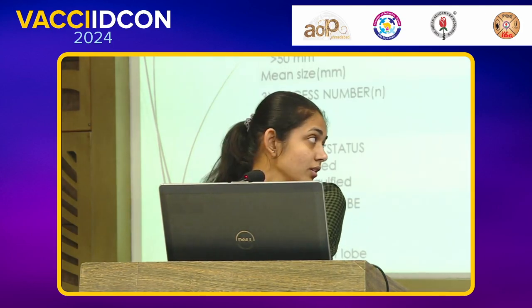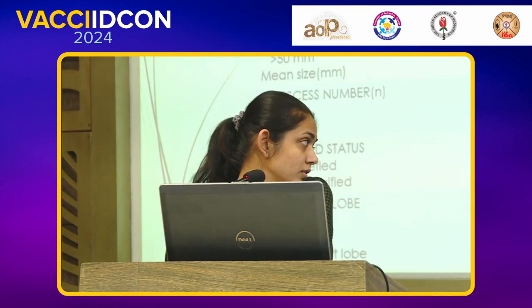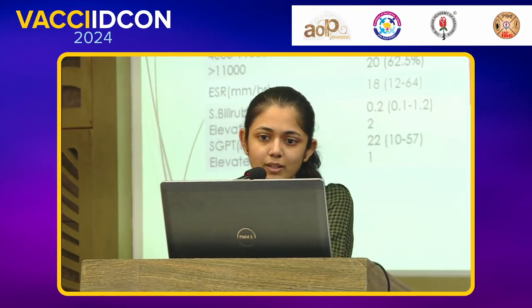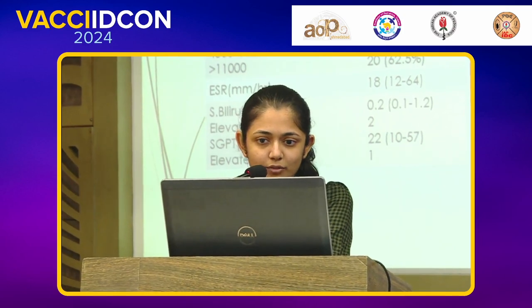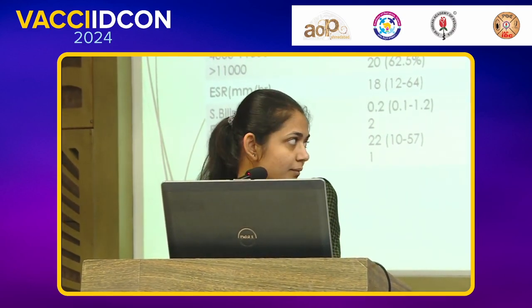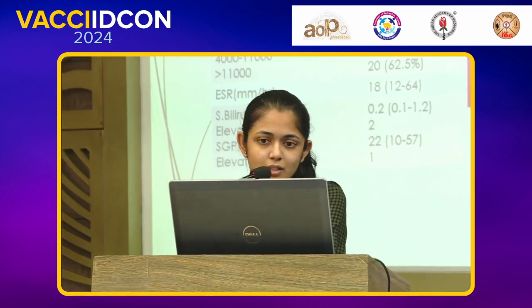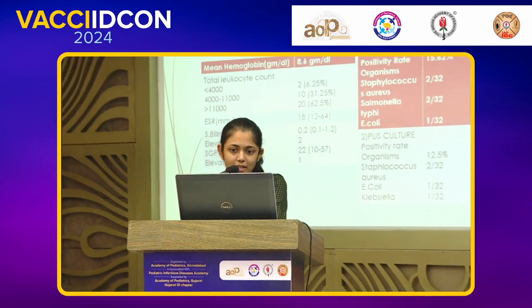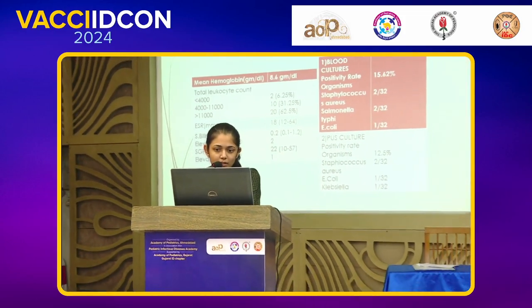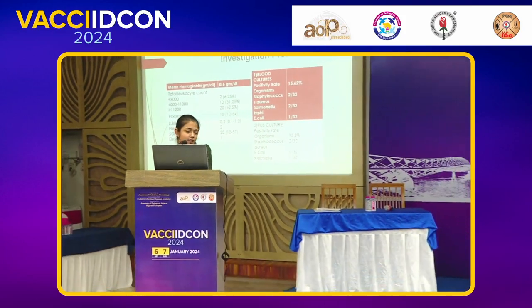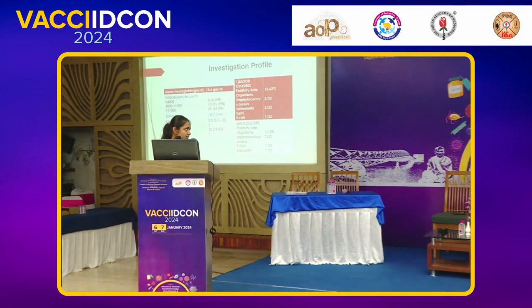In blood culture, Staph aureus, Salmonella typhi, and E. coli are common. In pus culture, Klebsiella is more common. Staph aureus is common in both blood and pus culture.